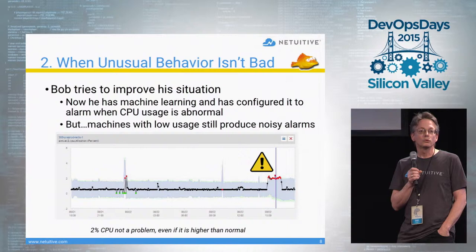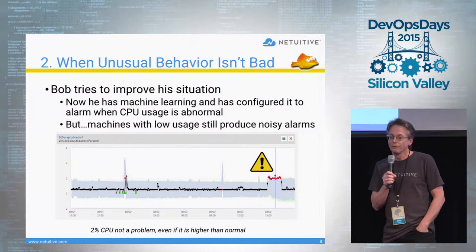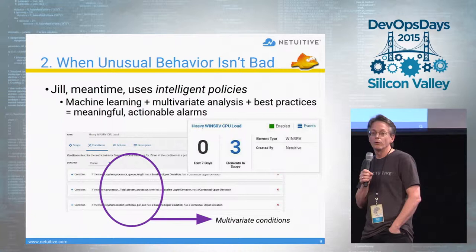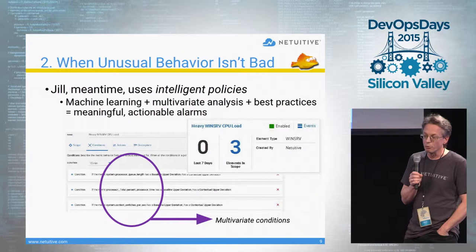So Bob decides to improve his situation. He sets up software with machine learning and configures it to alarm when CPU usage is abnormal. But there are machines that have low CPU usage, and when they spike to 2%, he gets false alarms. Jill, in the meantime, is using intelligent policies. These take the machine learning of what's normal along with the results of multivariate analysis and combine them with best practices in order to produce alarms that are both meaningful and actionable.